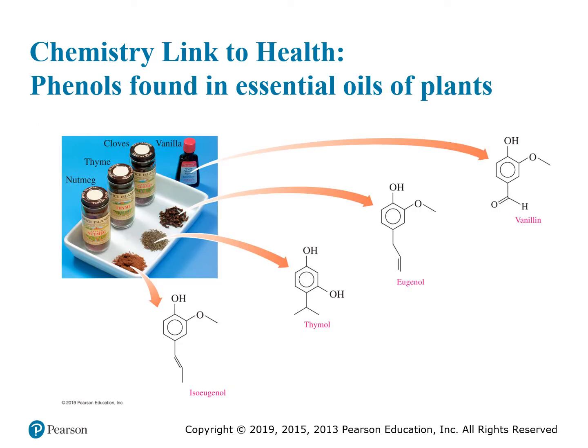Remember that benzene was called aromatic because it was originally derived from certain herbs and spices. We can see examples of benzene derivatives — in this case phenols — derived from sources like nutmeg, thyme, cloves, and vanilla. These chemical compounds are partially responsible for the aromas of those substances.